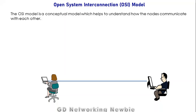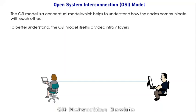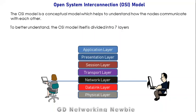You cannot touch the OSI model because it is just a conceptual model. To better understand it, the OSI model itself is divided into seven layers. When reading these layers, we start from the bottom, and the layers are numbered from bottom to top.